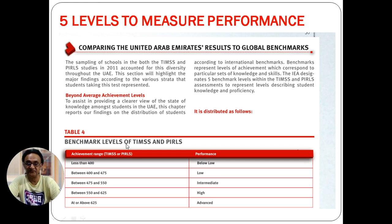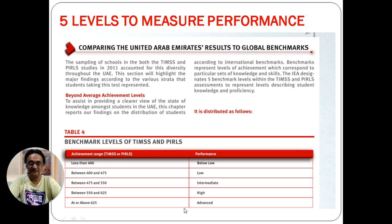There are five levels to measure performance in TIMSS and PIRLS. The levels are: Below Low (below 400), Low (400–475), Intermediate (475–550), High (550–625), and Advanced (625 and above). These are the key benchmarks you need to know.